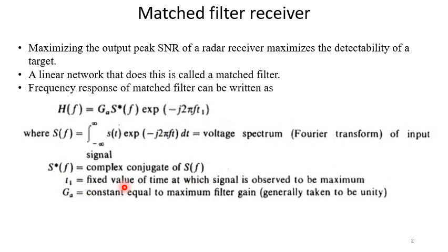t_1 is the fixed value of time at which signal is observed to be maximum. And G_A is the constant equal to maximum filter gain. We can take it as unity as well.